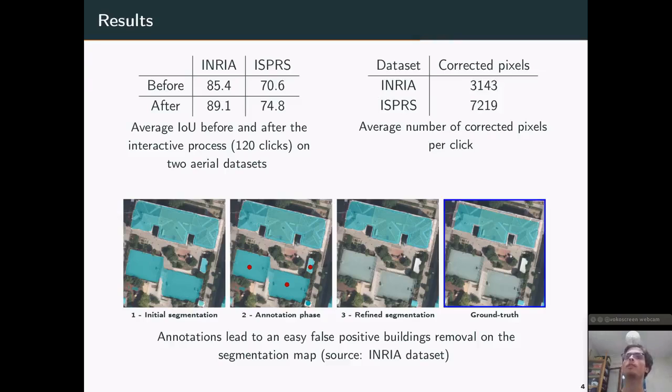And we also observed an average number of 5000 corrected pixels per click. And here is also an example of our framework in a building segmentation case. So in the initial segmentation, the neural network efficiently captures the buildings, but it also wrongly predicts two sports fields as buildings. And these annotations, the three annotations, efficiently correct and refine the initial segmentation proposal.